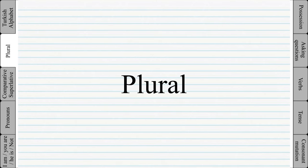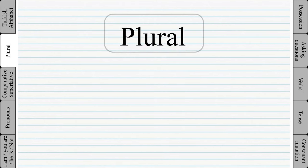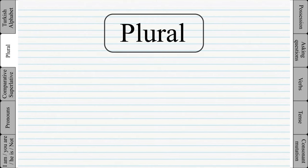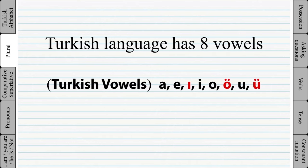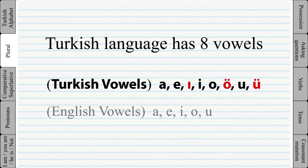Plural. To make a word plural we add either 'ler' or 'lar'. Which one to use depends on the last vowel of the word. These are the vowels in the Turkish language.